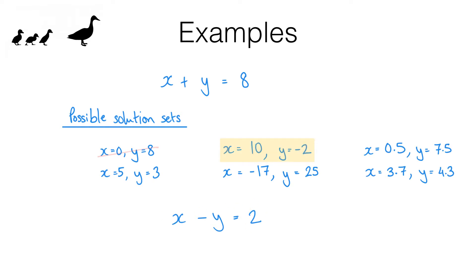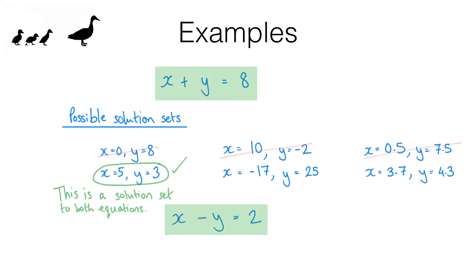Is 10 minus negative 2 equal to 2? No, that equals 12. Is 0.5 minus 7.5 equal to 2? No. Let's try X equals 5, Y equals 3: is 5 minus 3 equal to 2? Yes it is! So we've found a solution set that works for both equations — we have solved these simultaneously. That is the big idea for this video. Now doing this by trial and error is a long and slow process, so we need a better method, which is exactly what we're going to look at in the next few examples.